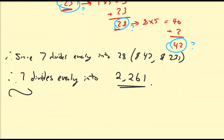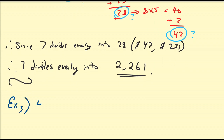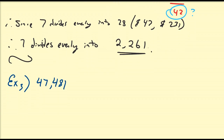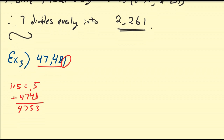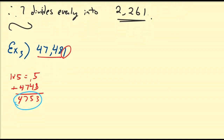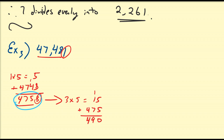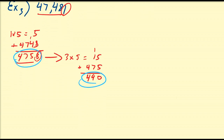Let's look at a larger number. Example 3: let's consider 47,481. Continuing as before: 1 times 5 is equal to 5, and adding it to its remaining number 4,748 — so 8 plus 5 is 13, carry the 1: 4 plus 1 is 5, giving us 4,753. Is this divisible by 7? Taking the last digit 3 — 3 times 5 is 15 — add to it its remaining digits 475: we get 490. Is 490 divisible by 7? You may say yes, because 7 goes into 49, since that's just a product of 7 times 7 times 10.